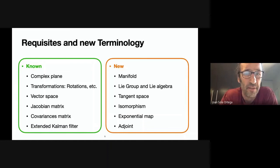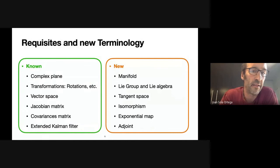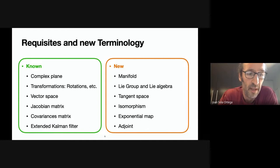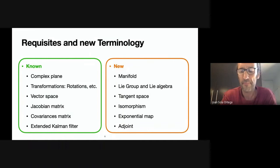This course will introduce a lot of new topics. On the right you see words you probably don't know, but on the left you should see terms and concepts you should know: complex plane, transformations, rotations, vector spaces, the Jacobian matrix. You should know what it is and be comfortable with these matrices. Covariances matrices the same. It will be very nice if you know the Kalman filter, because the example at the end of the course is a Kalman filter — but it's only for the end example. You can follow 90 to 95 percent of this course without it.